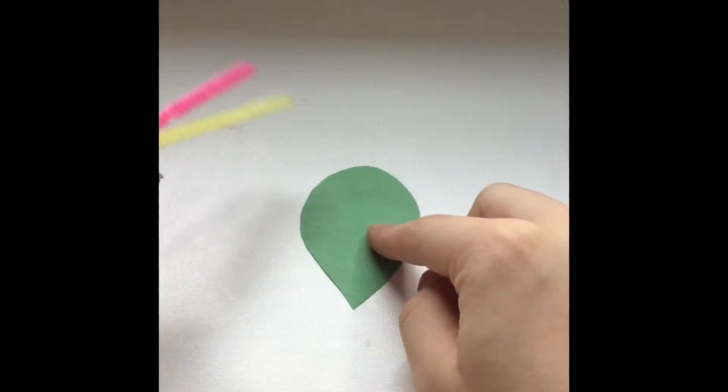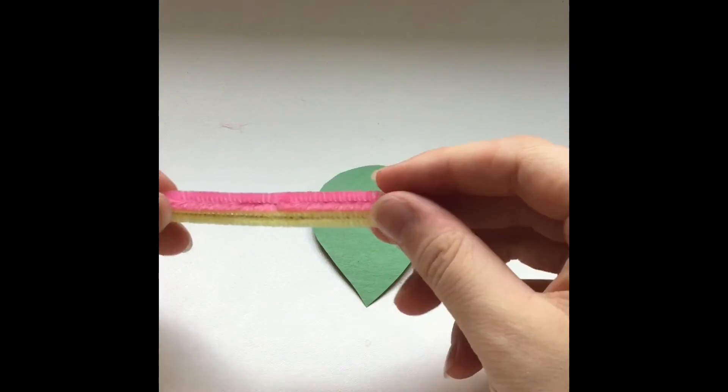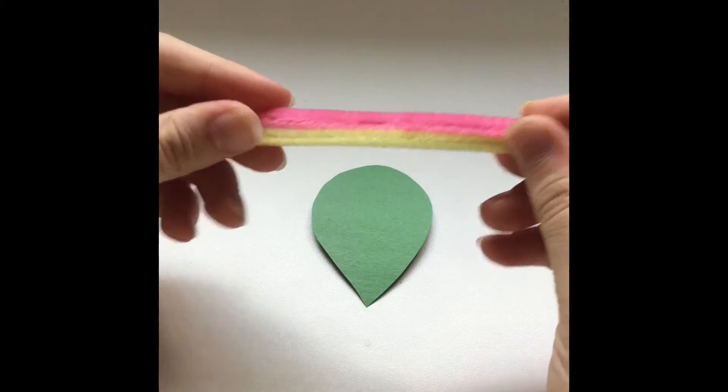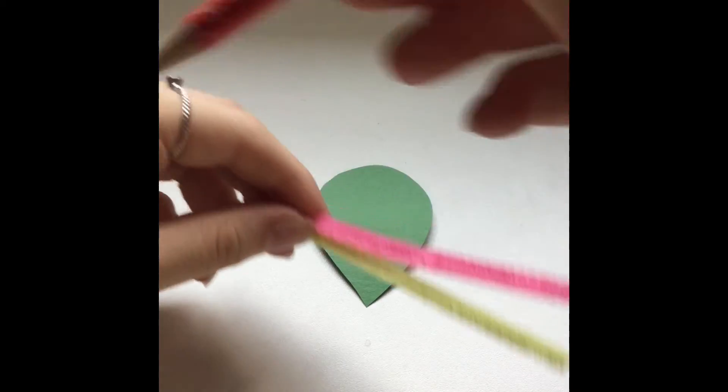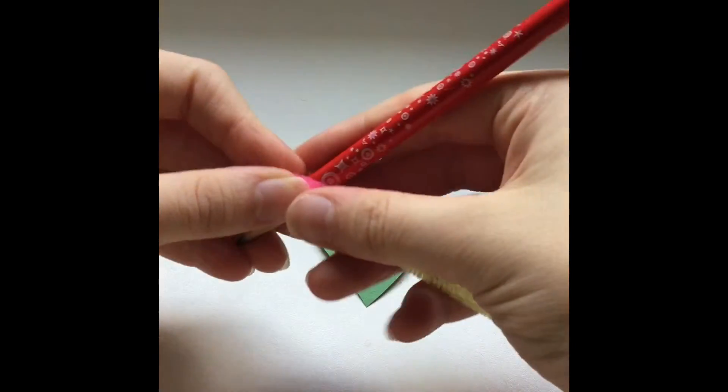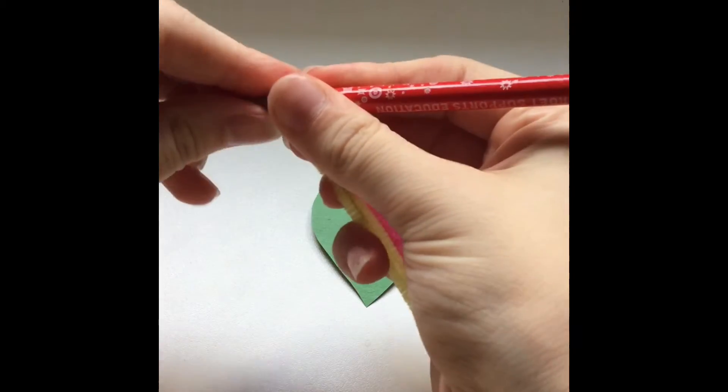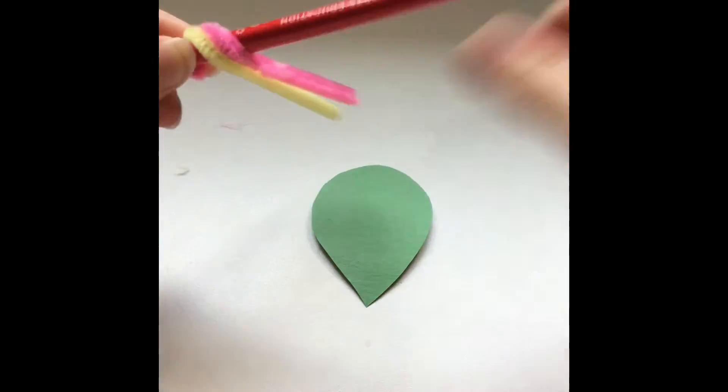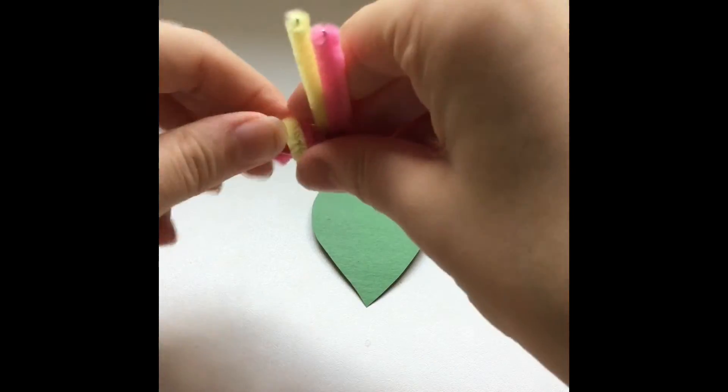Once your leaf is cut out, it should look like this. The next step is to take your two pipe cleaners, set them on top of each other, take your pencil, and wrap them around like this. So you just curl it and then wrap them around to make the little caterpillar.